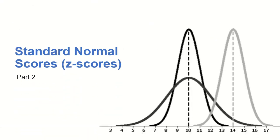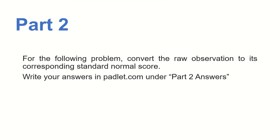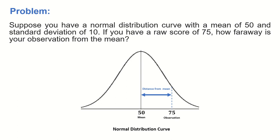Let us now move on to standard normal scores or Z-scores. For the Padlet activity, answer the following problem: suppose you have a normal distribution with a mean of 50 and standard deviation of 10. If you have a raw score of 75, how far away is your observation from the mean? We want to know the corresponding Z-score. You may pause this video and resume watching after you upload your answers.